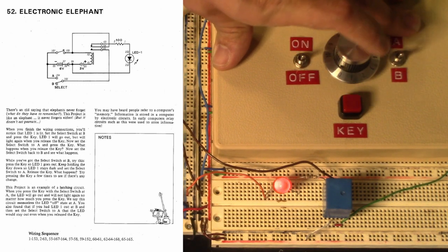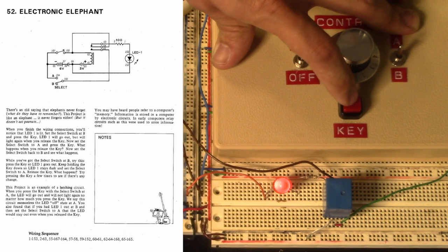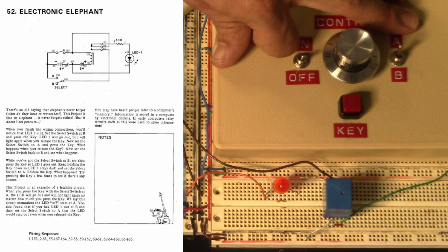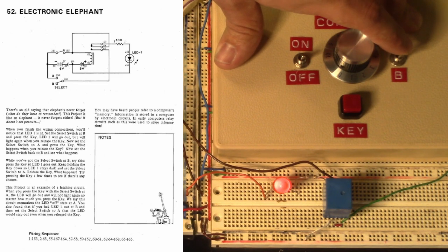Now set the select switch to A and press the key. What happens when you release the key? Now set the select switch back to B and see what happens.